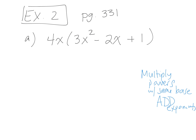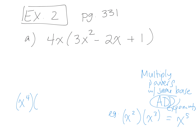For example, x to the power of 2 times x to the power of 3 — you add the exponents, so that's x to the power of 5. Try this: x to the power of 4 times x to the power of 2 — just add the exponents, 4 plus 2 is 6, so x to the power of 6. What's x to the power of 10 times x to the power of 5? Just add the exponents.